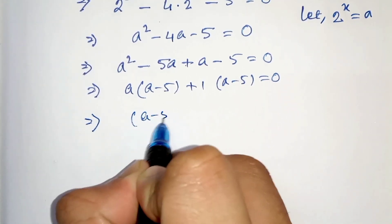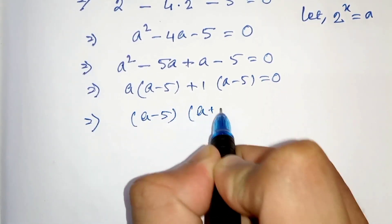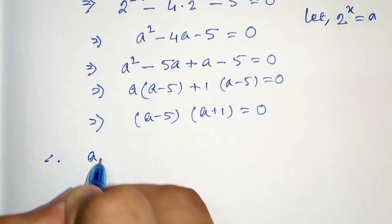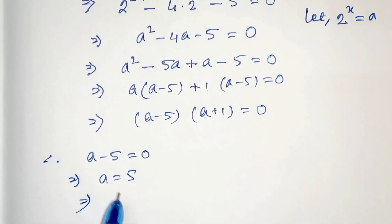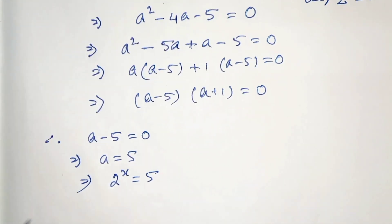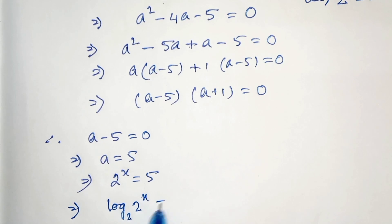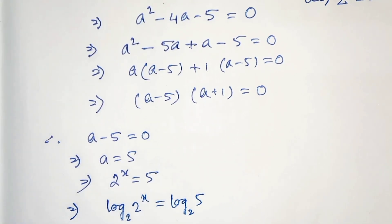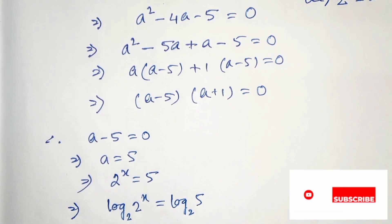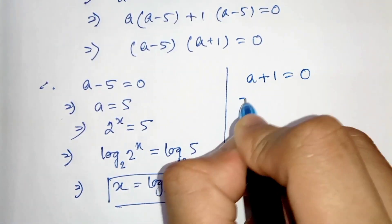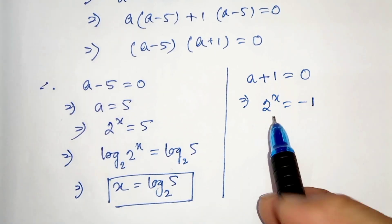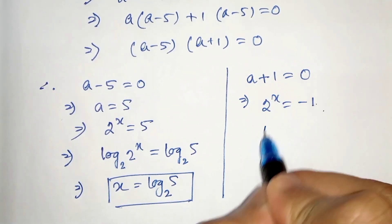In the next step it will be (a minus 5)(a plus 1) equals to 0. Therefore we can write a minus 5 equals to 0, which gives a equals to 5, and since our a was 2 to the power x, we get 2 to the power x equals to 5. Taking log with base 2 on both sides, x equals to log of 5 with base 2. For the other factor, a plus 1 equals to 0 gives 2 to the power x equals to minus 1. Since 2 to the power x cannot be negative, this solution is rejected.